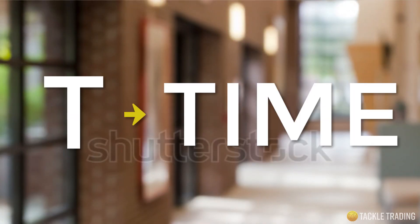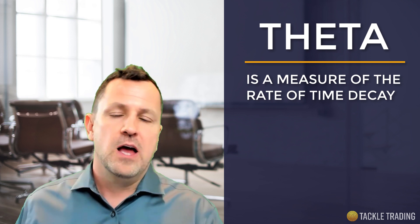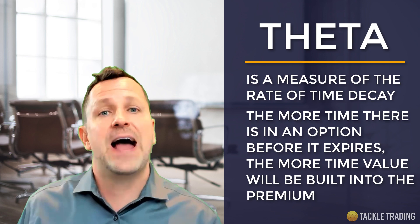Now that we have a clear understanding of Delta, let's take a look at Theta. T for Theta, T for Time — time is money. Theta is the rate of time decay; it's how sensitive the Option Premium is to the passage of time. The more time there is before expiration, the more time value is built into the Premium. Each calendar day that passes, time value drips out of the option, and that rate increases dramatically in the last 30 to 60 days before expiration.